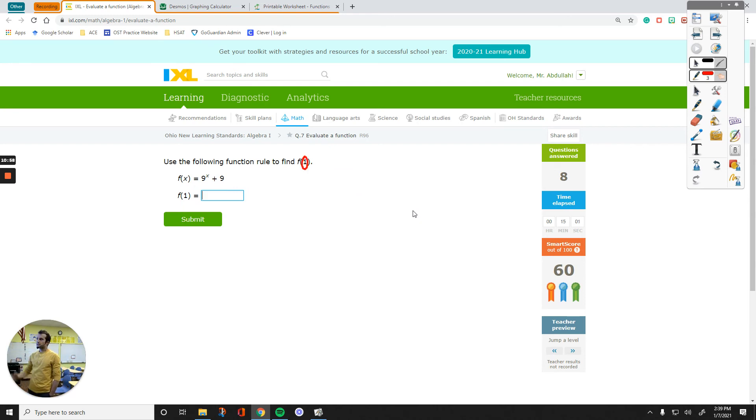Plug this in for X. Rewrite the whole thing. F of X becomes F of 1 because we plugged in 1 for X. Right side is 9 to the power of, that's my X, plus 9. 9 to the first power. Any number to the first power is the number itself. So, this equals to 9 plus 9 is 18. So, this is the value of F of 1.